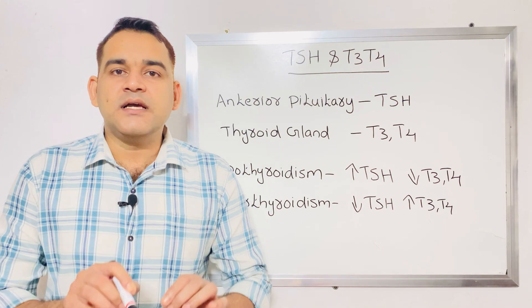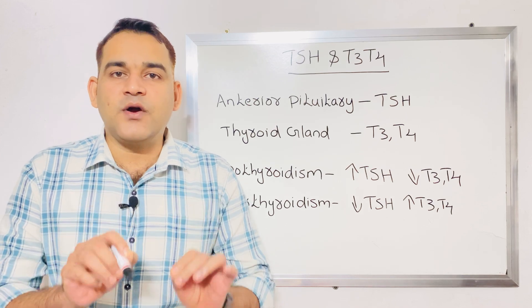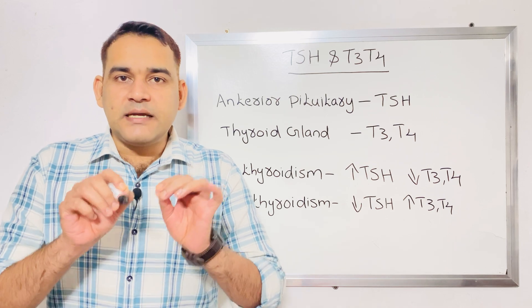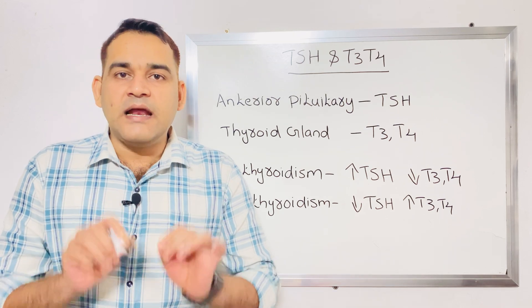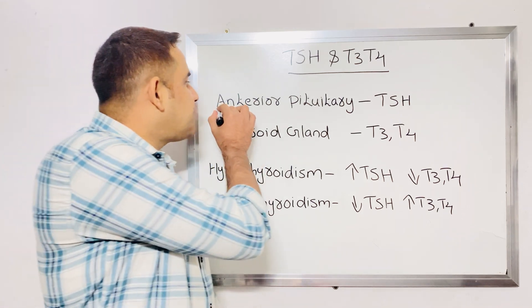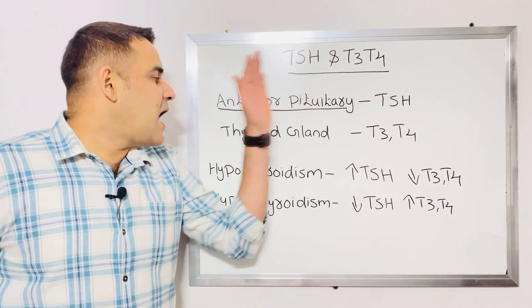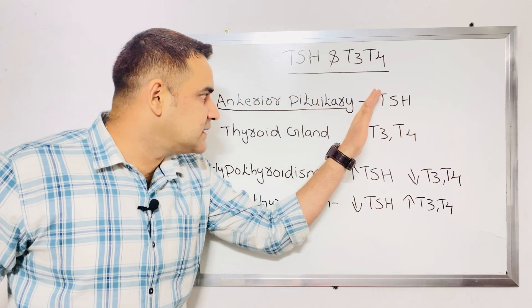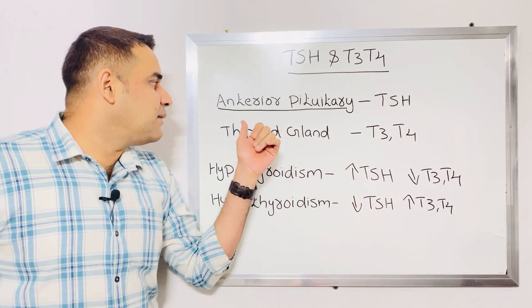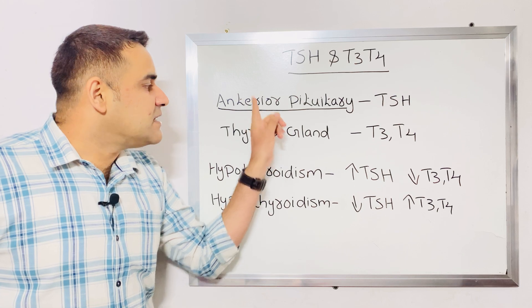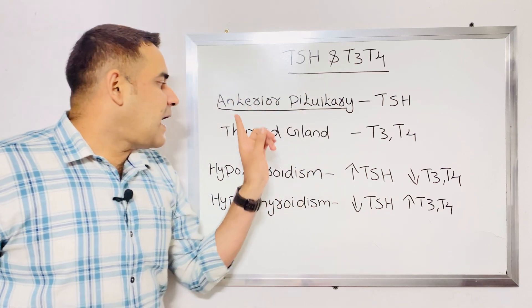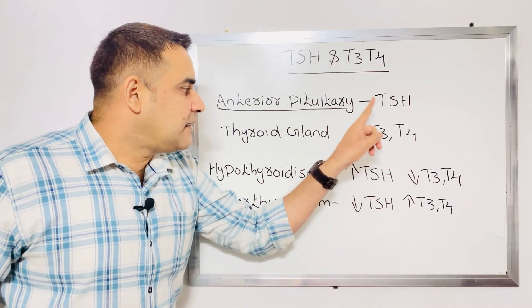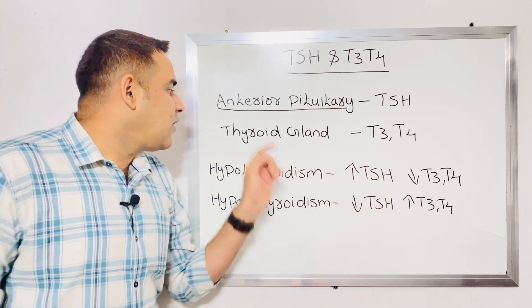TSH means thyroid stimulating hormone. In the name itself thyroid is there, but it is not secreted by the thyroid gland. TSH is secreted by the anterior pituitary gland. Keep it in mind. The thyroid gland secretes the hormones T3 and T4.